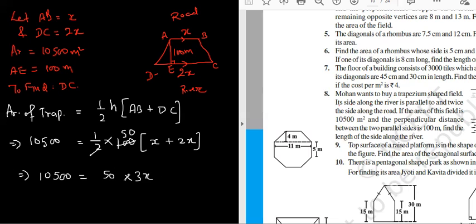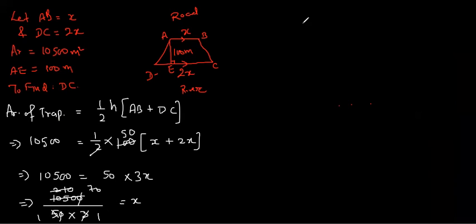10,500 equals 50 times 3x. I will shift all the constants to the other side: 10,500 divided by 50 divided by 3 equals x. Cancel the zeros - this is 70. So I got x equals 70 meters. Therefore AB equals 70 meters. Anyway, this was not asked. DC equals 2 times 70 equals 140 meters.